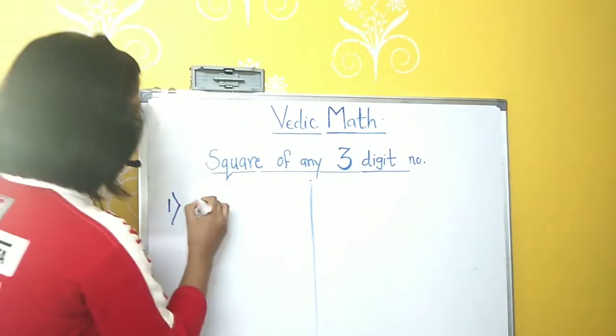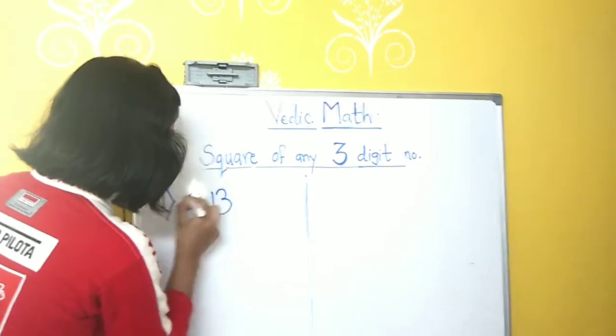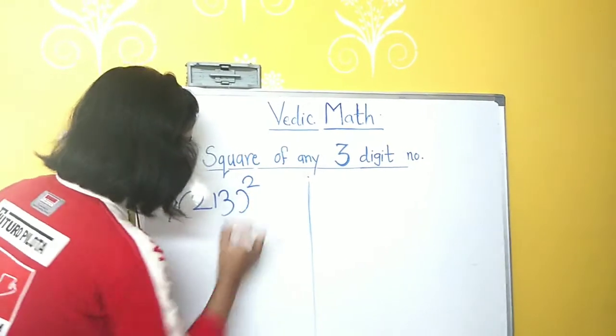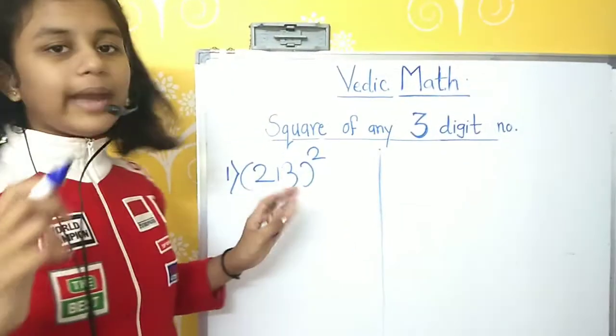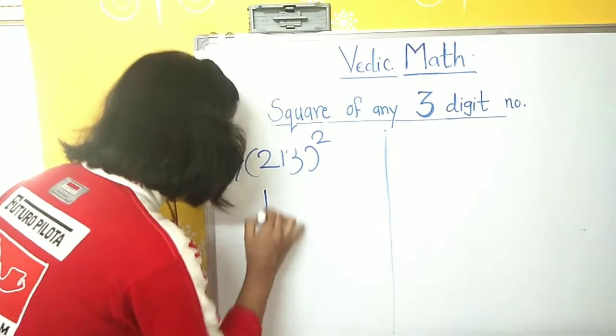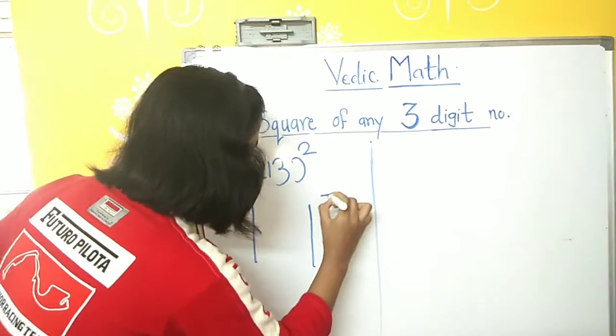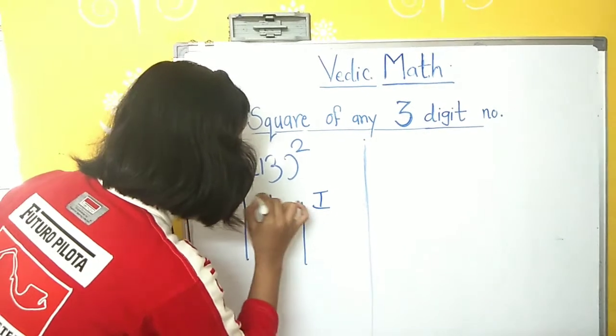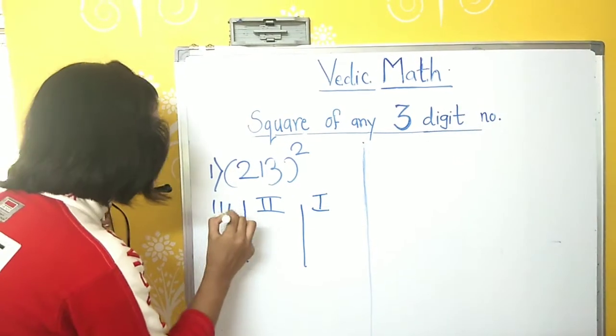I will take the number 213 square. So, to square a number, three-digit number, we need to solve three steps. First step, second step and the third step.